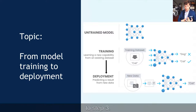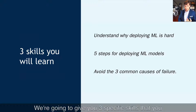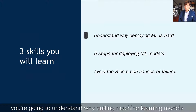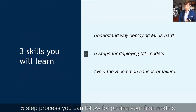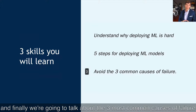We're going to give you three specific skills by the time we finish this webinar. First, you're going to understand why putting machine learning models into production is hard. Second, I'm going to give you a five-step process you can follow for putting your first models into production and continuously improving them. And finally, we're going to talk about the three most common causes of failure and what you can do to avoid them.